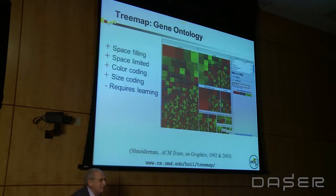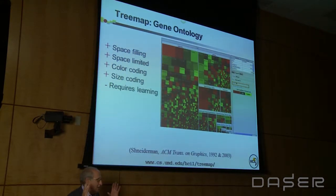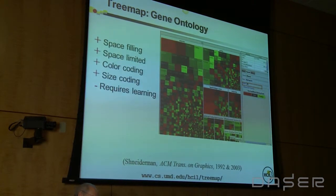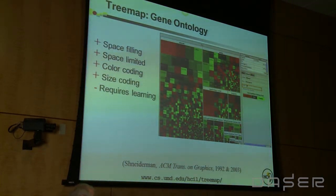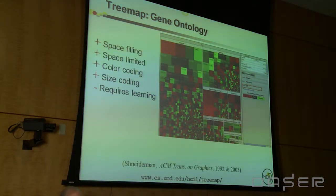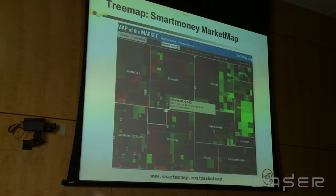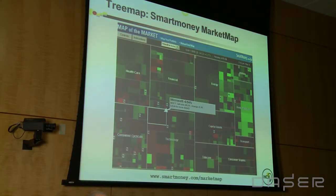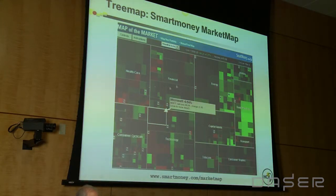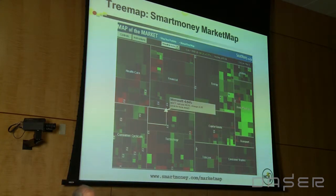The treemap story goes back to about 1990, when I was trying to have a visual representation of what was on my hard drive. I struggled for weeks and months, then had an aha moment in the faculty coffee lounge. The most significant early application was with Martin Wattenberg, who was then working for Smart Money, where I helped as a consultant to make the market map. This shows 600 stocks organized into 11 industry groups — green stocks are rising, red stocks are falling, and the area represents a company's market capitalization.